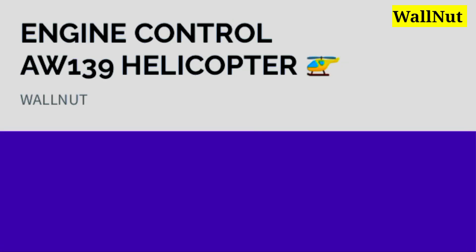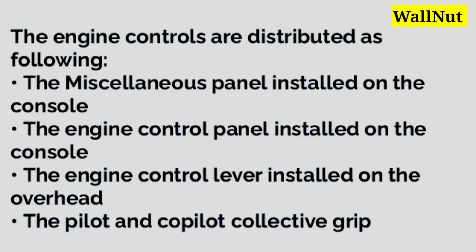AW139 Helicopter Engine Control. The engine controls are distributed as follows: the miscellaneous control panel installed on the console, the engine control panel installed on the console, the engine control lever installed on the overhead, and the pilot and co-pilot collective grip.